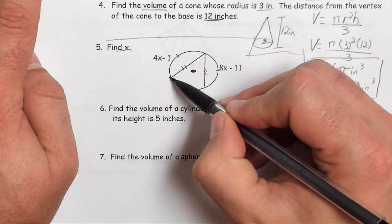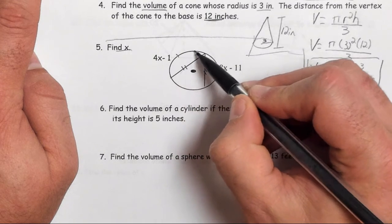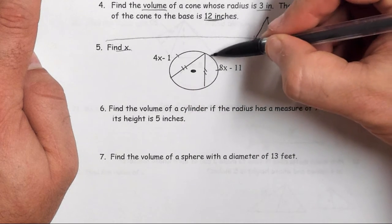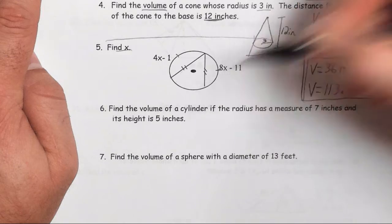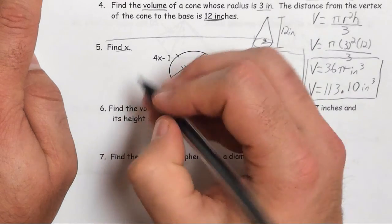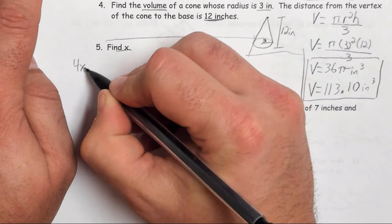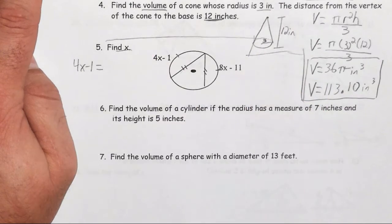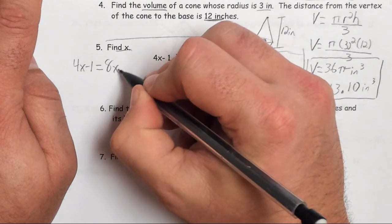So that means that this arc measure of 4x minus 1 is going to equal the arc measure of 8x minus 11. So what that gives me is an equation: 4x minus 1 is equal to 8x minus 11.